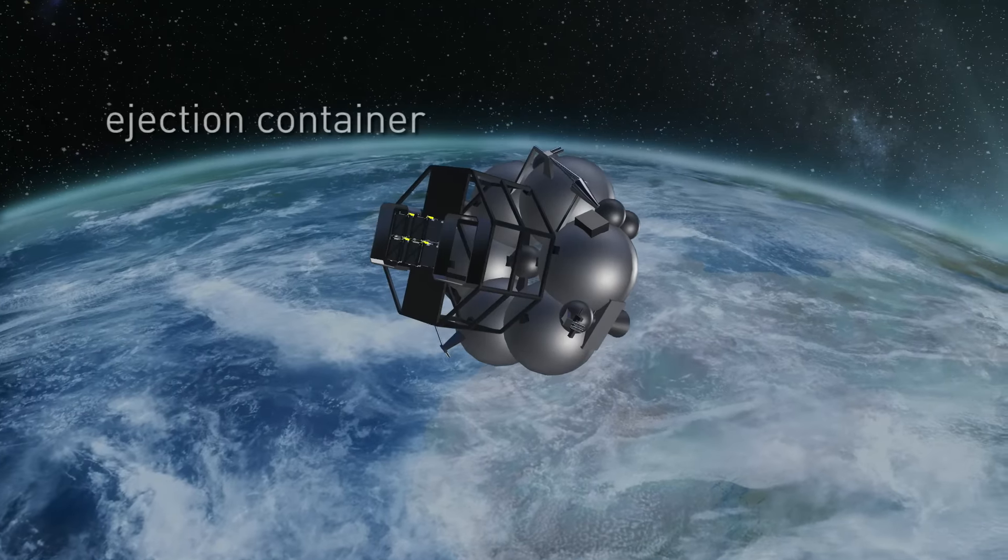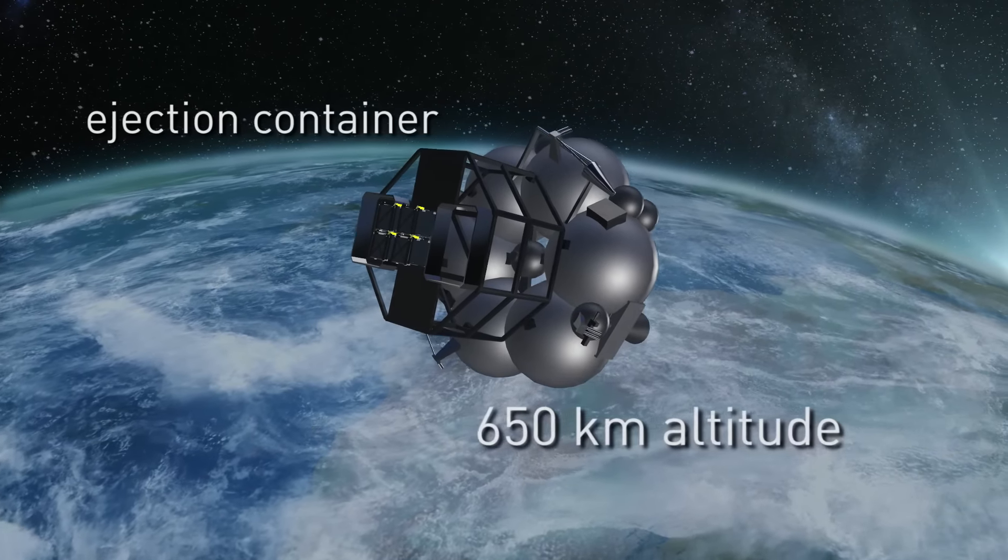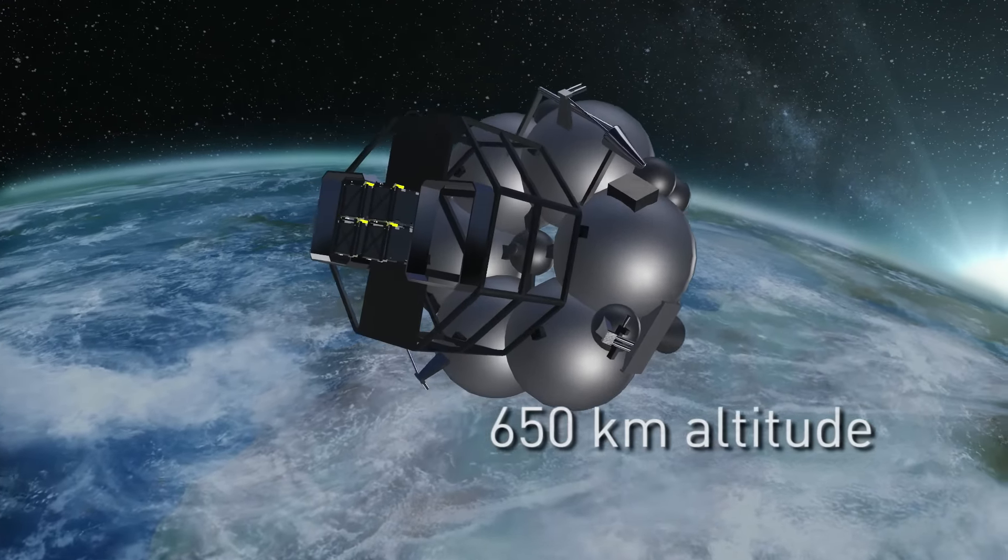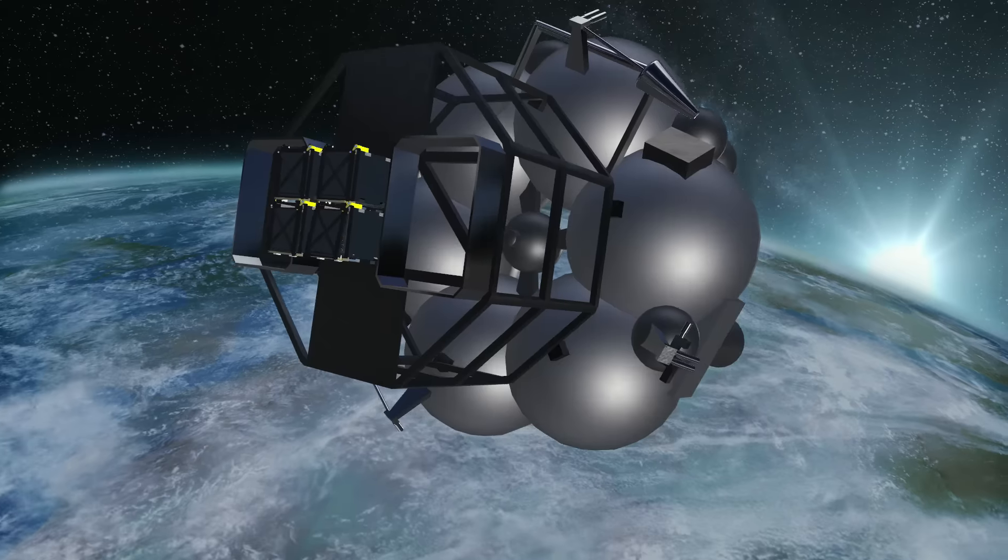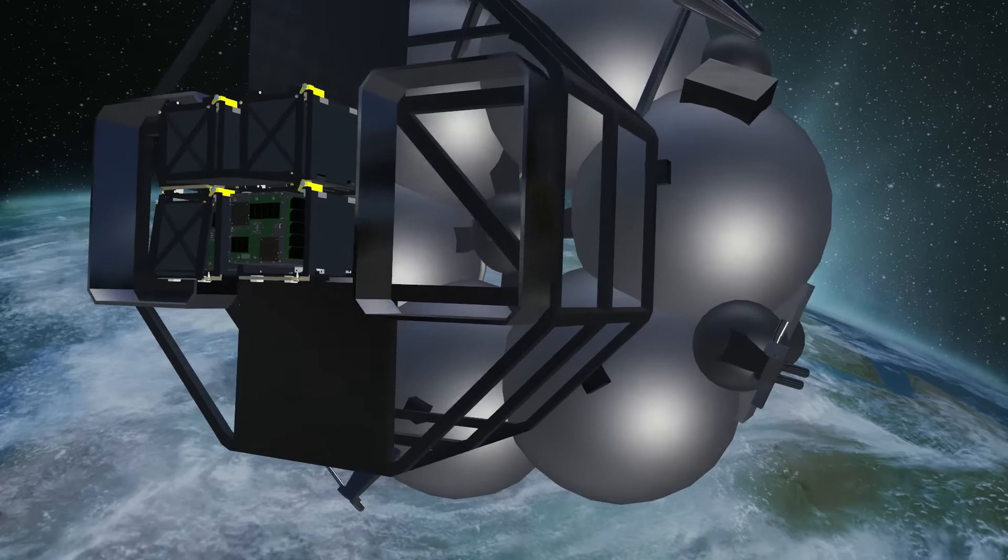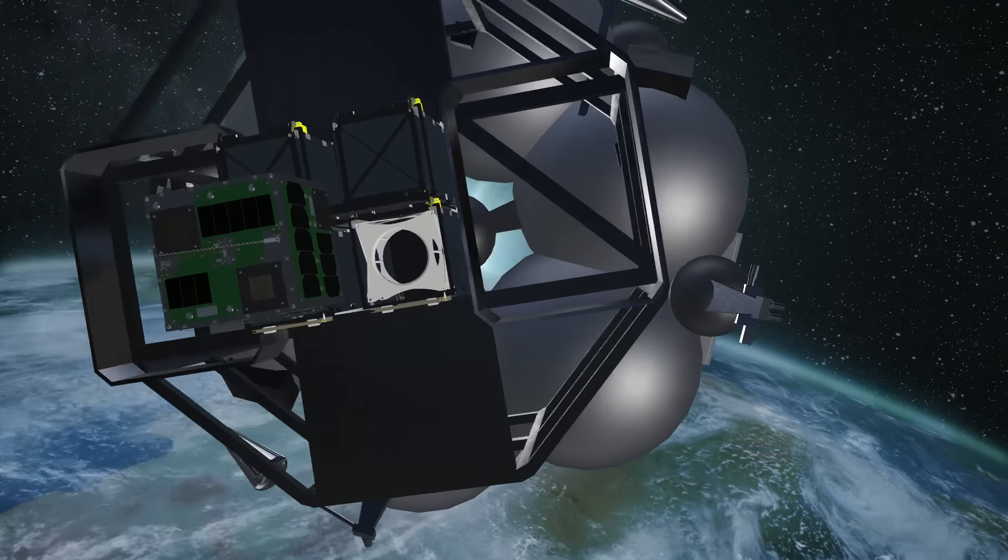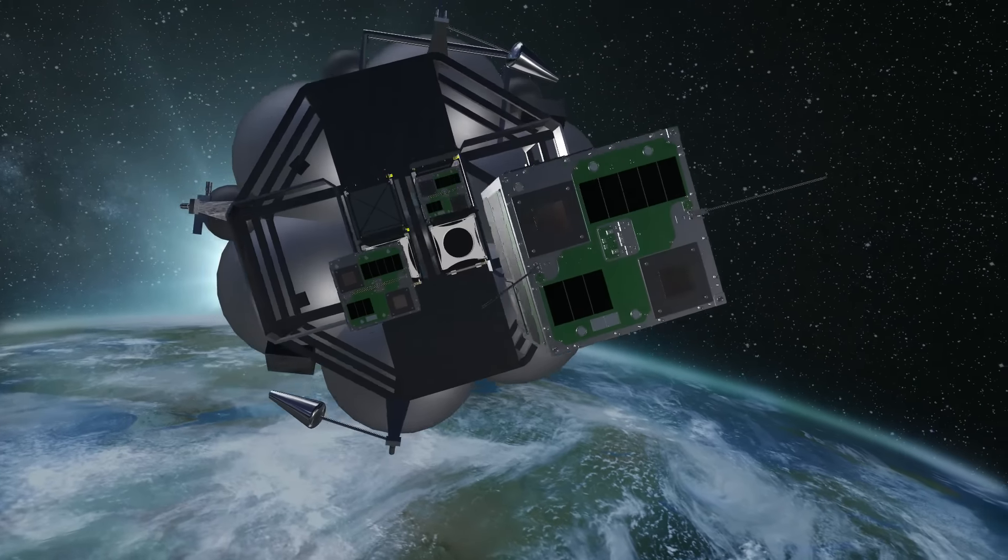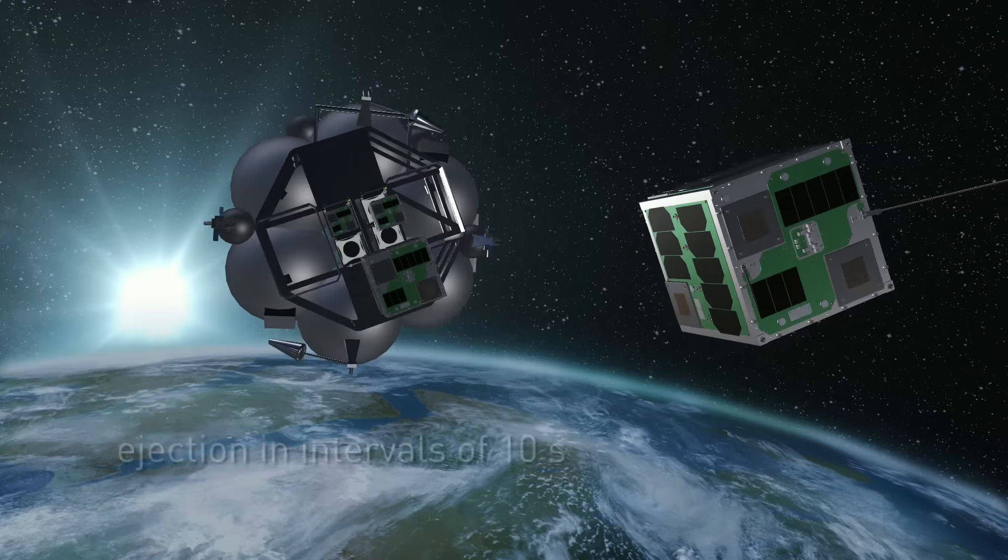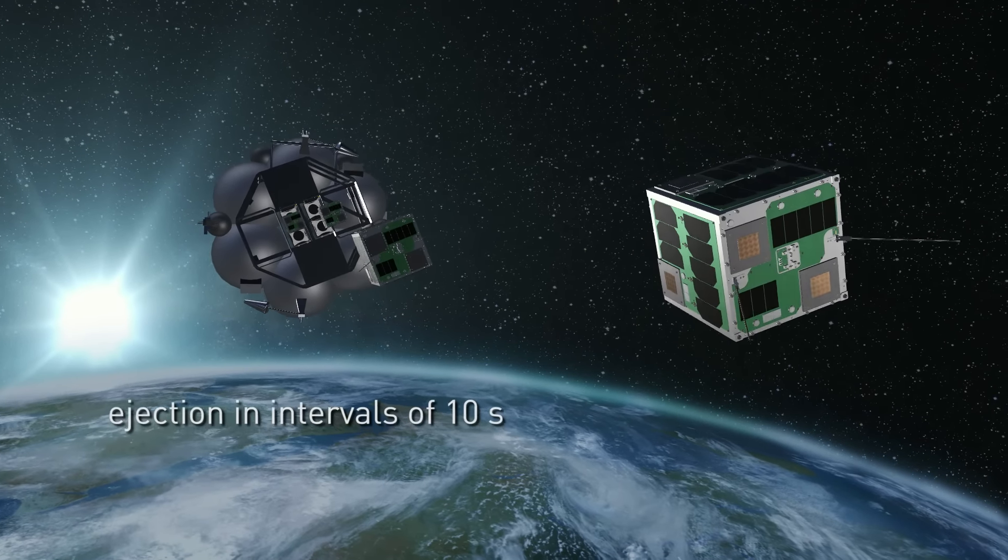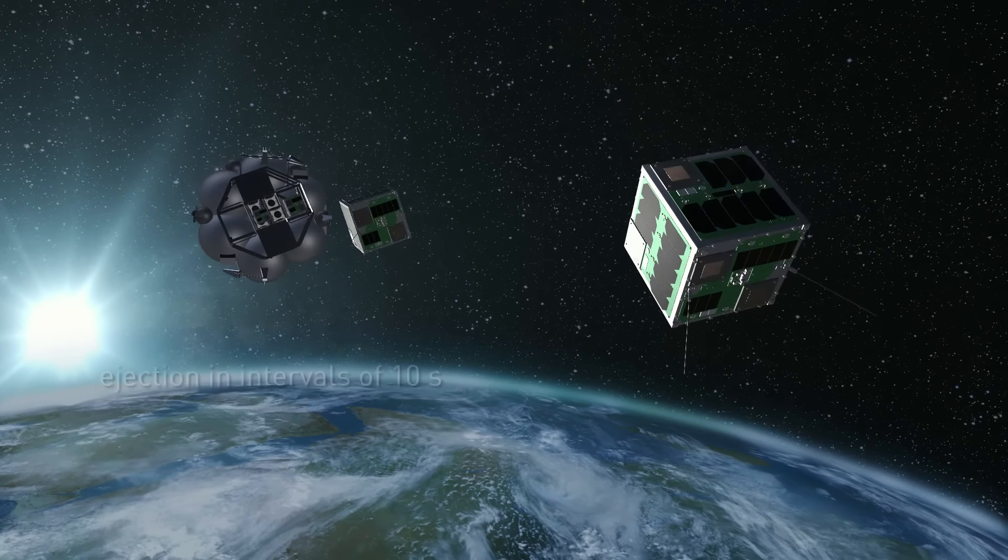The first container will open at an altitude of 650 km above the Earth's surface, where it will deposit its first cube-shaped passenger with an edge length of just 24 cm. The next three satellites will then be released in intervals of 10 seconds and start operating immediately.